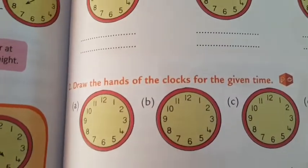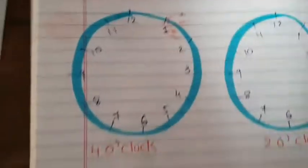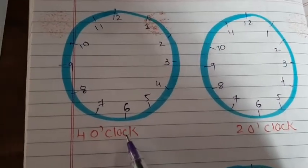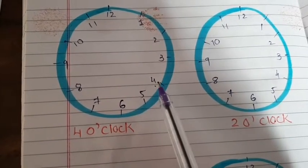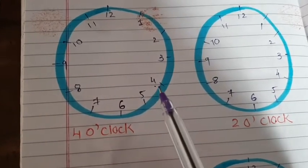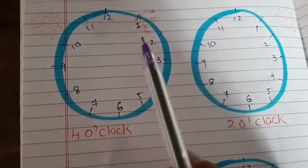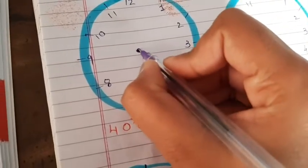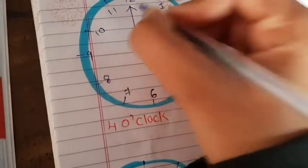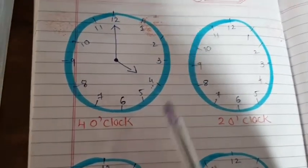Next question: draw the hands of the clocks for the given time. First is 4 o'clock. For 4 o'clock, the hour hand (the short one) will be on 4, and the minute hand (the long one) will be on 12. So the long hand is on 12 and the short one is on 4 - draw it like this.